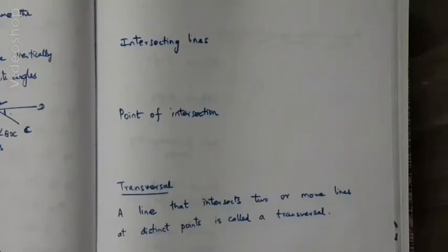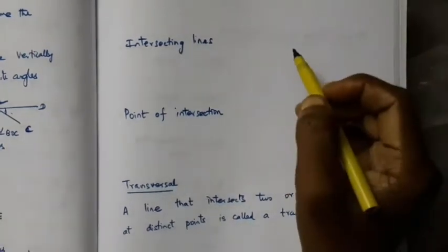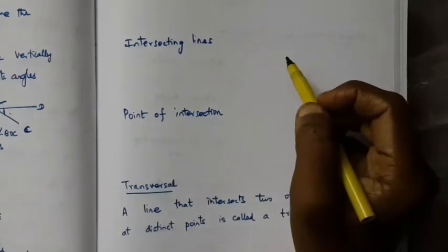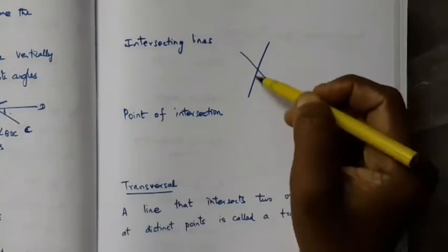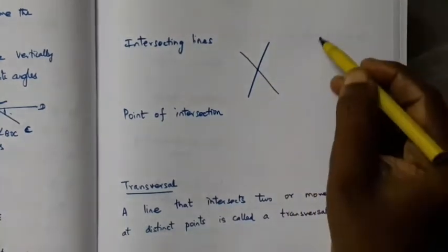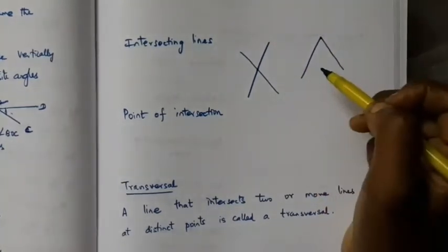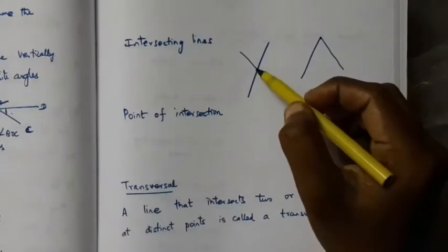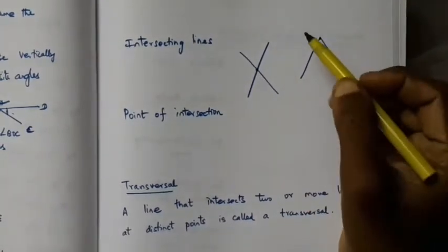Good morning. In this class we will study about transversals and transversals of parallel lines. First we should understand what are called intersecting lines. When two or more lines have a common point, for example these two lines have a common point here, then these lines are called intersecting lines. The point where they meet each other is called the point of intersection.